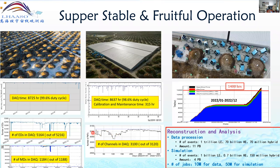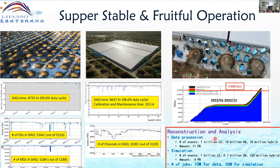Remember, we have 3,120 detectors indicated by the dashed line, and this is the real number we keep alive. In terms of data volume, we recorded one trillion low-energy events and 70 billion high-energy events last year. We also have one billion low-energy simulated events to support the reconstruction of the one trillion real events, and 0.7 billion simulated events for the high-energy sample.